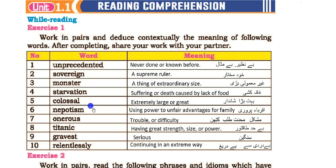Number five is 'colossal' — extremely large or great. Number six is 'nepotism' — using power to give unfair advantages to family members.